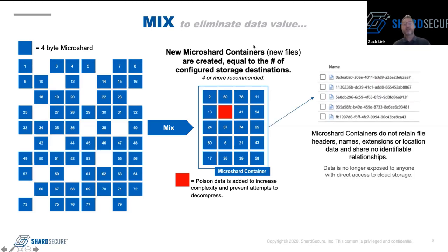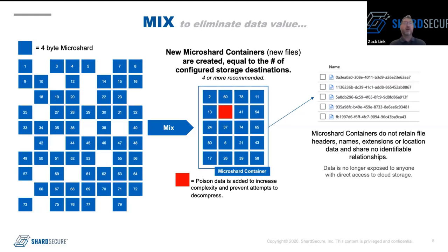The micro shard containers basically just look like files in storage. When they're at rest, you'll just see a UUID for the micro shard container — it does not retain any file headers, file names, or extensions. It also has no location information about where the other related micro shard containers live. So even if an attacker compromised one of your storage locations, they'd have just fragments of files that are all mixed up — basically unreadable and unusable, with no context about what kind of data it is or where the rest has been distributed.